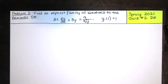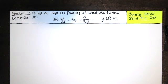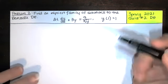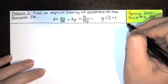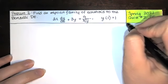In this video, we solve problem number two from the spring 2021 quiz number two for differential equations. This is a Bernoulli differential equation. Now, there were multiple forms to this quiz, so this may not be your problem number two. This is problem number two on one of the forms of the quiz.